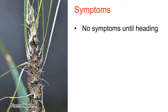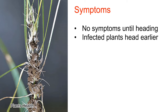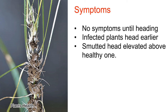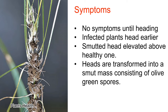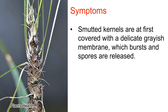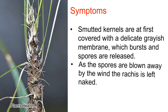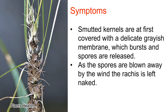Symptoms: No symptoms until heading. Infected plants head earlier. Smutted heads are elevated above healthy ones. Heads are transformed into a smut mass consisting of olive-green spores. Smutted kernels are at first covered with a delicate grayish membrane; at maturity the membrane breaks and spores are released and blown away by the wind, leaving bare branches.